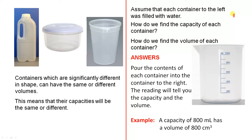Assume that each container to the left was filled with water. How do we find the capacity of each container? How do we find the volume of each container? The answer is: pour the contents of each container into the container to the right. The reading will tell you the capacity and the volume.